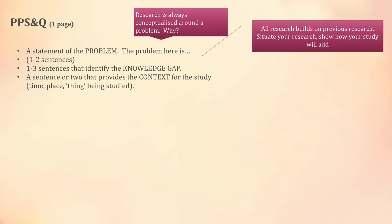The next thing that goes into the problem statement is a sentence or two that provides the context for the study. The context grounds the research—it is the time, the place, the people, or whatever you are studying. This is where you would say the study is happening currently or historically, and around a particular group of people, documents, or whatever your samples are.